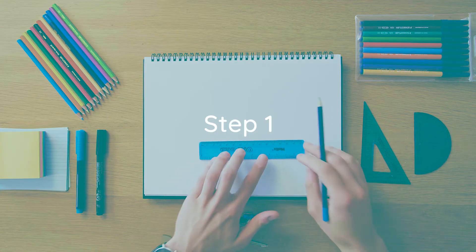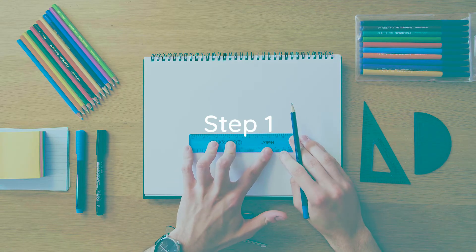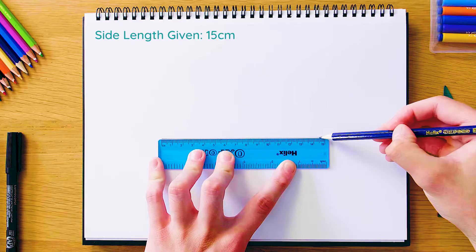The first step is to grab our ruler and draw our side length that we know, which is going to be in this case 15 centimeters. We're just going to draw that straight across.